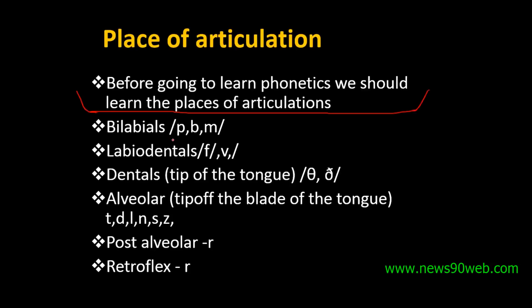Bilabials. Bilabials means bi — two, labial means lips. Bilabials means the two lips are articulated together. P, B, M — these three sounds are called bilabials. The lips touch. One sound is called a plosive — plosives mean they explode. They are said to be bilabials.